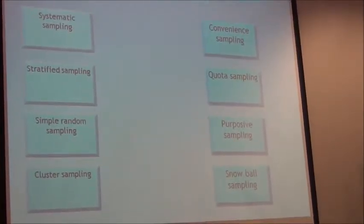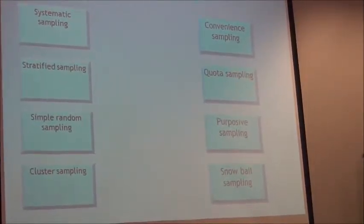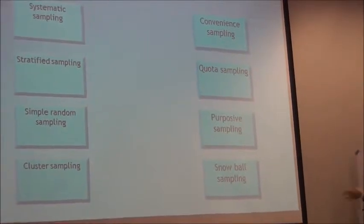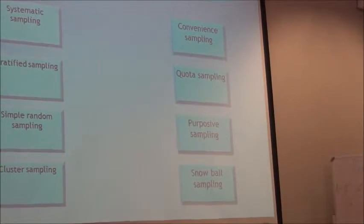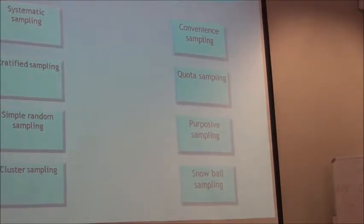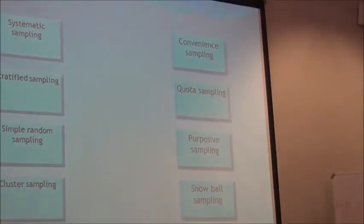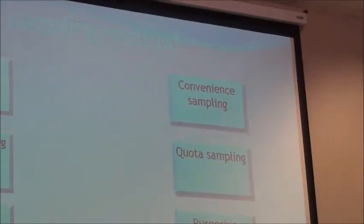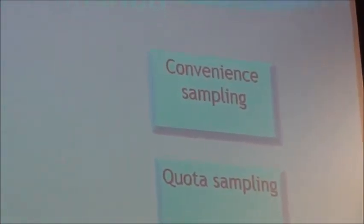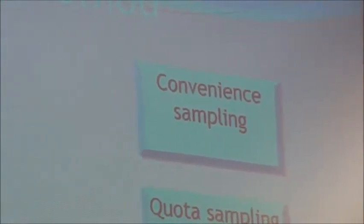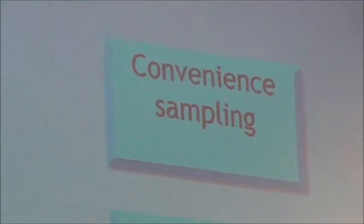There are also other non-probability methods: a competitive case, a best case, a worst case, and deviant cases. Convenience sampling is exactly what it sounds like — you go into a shopping mall because it's convenient and target people there. But that reduces the generalizability of your research because you're targeting a specific group.